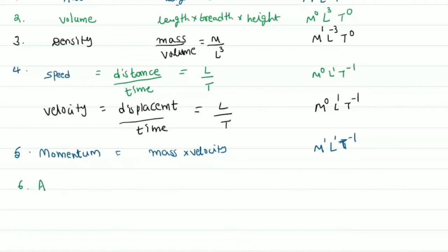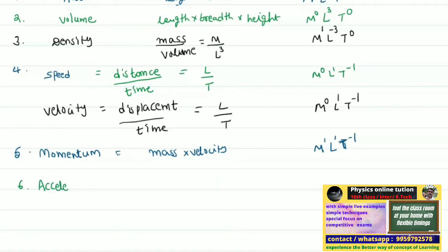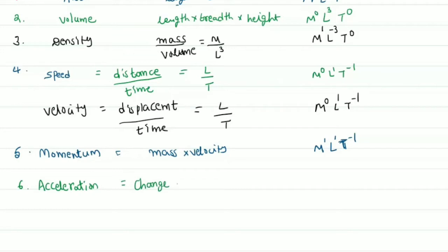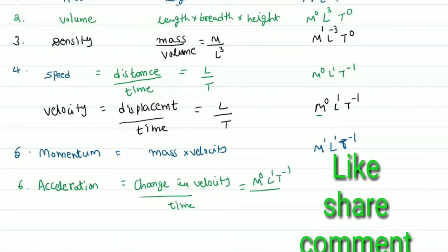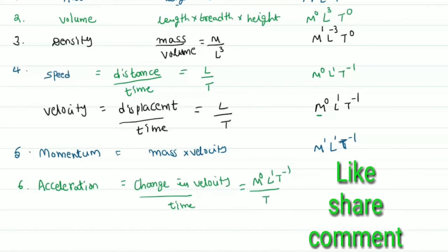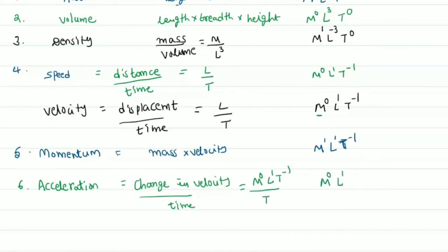Next is acceleration. Acceleration is defined as the change in velocity per unit time, i.e., velocity divided by time. Since velocity has dimensions M power 0, L power 1, T power minus 1, dividing by time T gives M power 0, L power 1, T power minus 2.